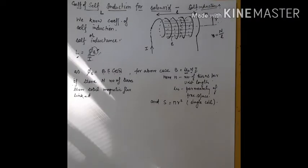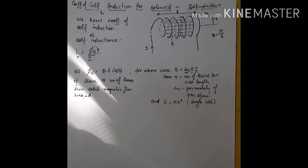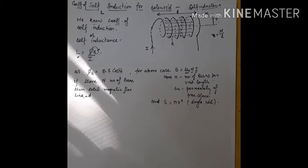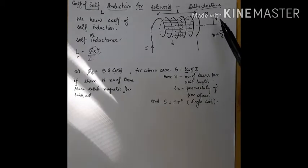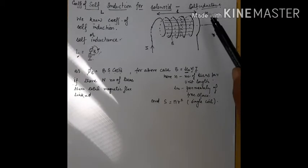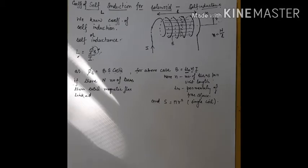In this video we will discuss the coefficient of self-induction for a solenoid, which is also called self-inductance. For that, I consider a solenoid having length L and radius small r. Let small n be the number of turns per unit length, so the total number of turns divided by L equals n.